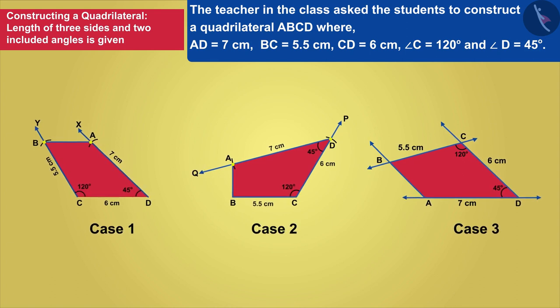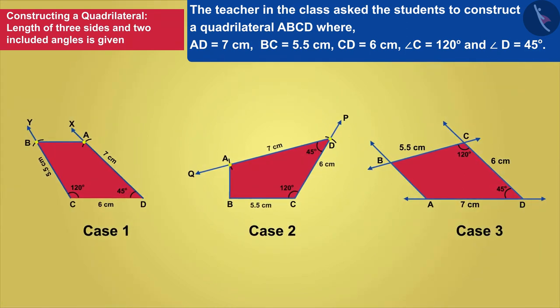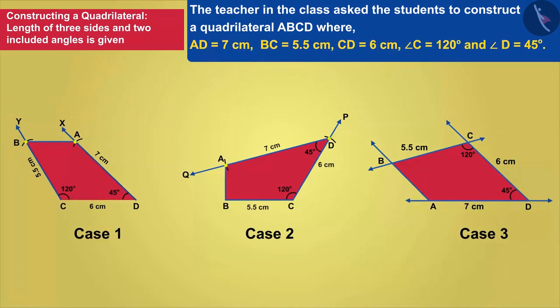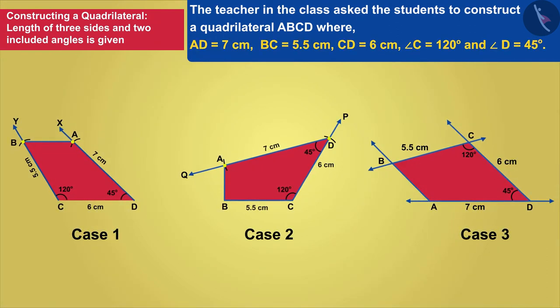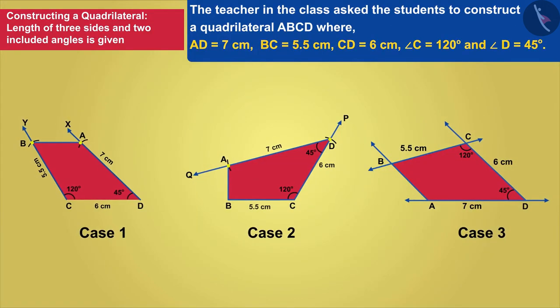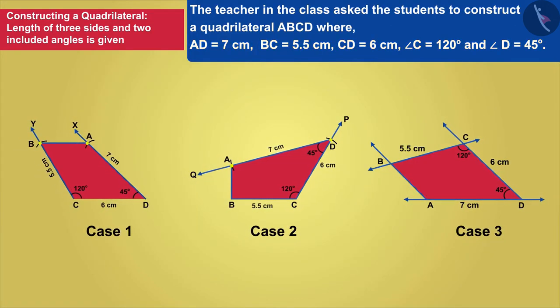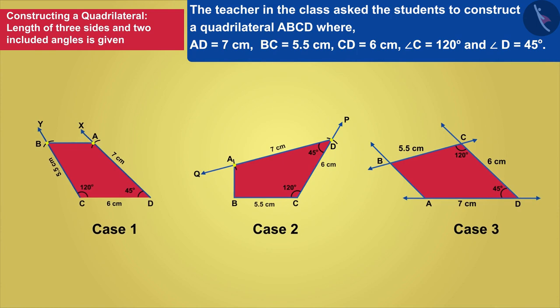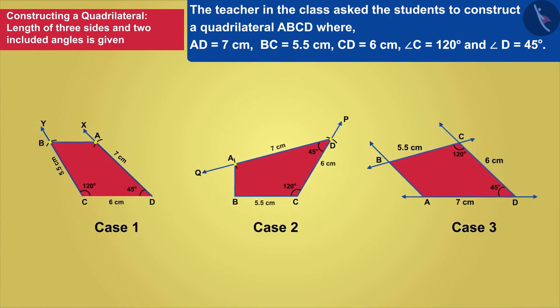We can say that when we know the measurements of the three sides of the quadrilateral and the two angles between them, then we can start the construction by considering any one of these three sides as the base.